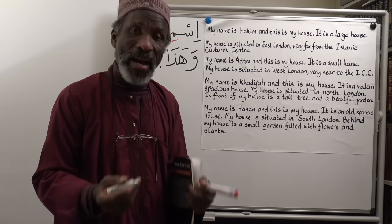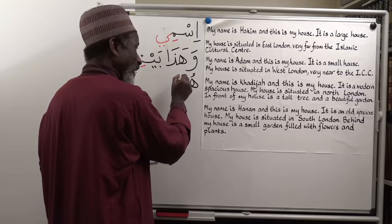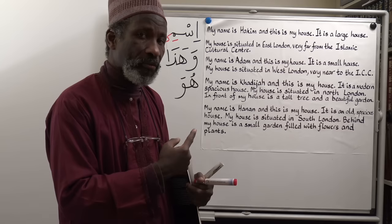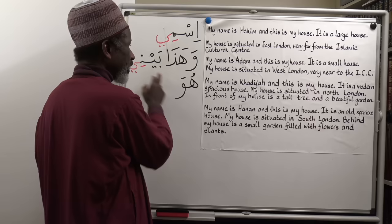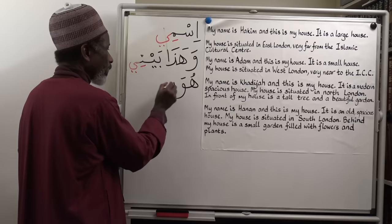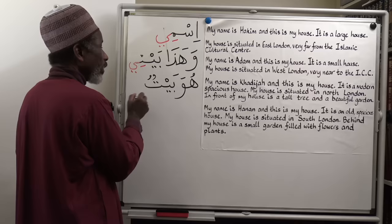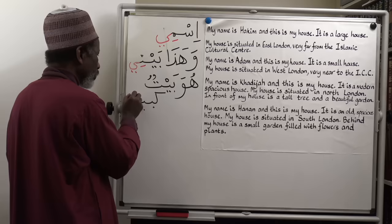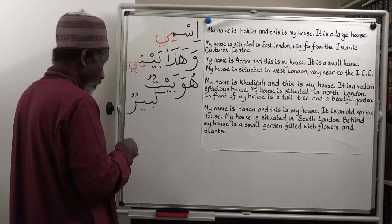It is a large house. We use Huwa here because we are referring to something which is a masculine noun — the house. Huwa means 'it is' and can also be used for 'his.' Huwa baytun kabirun — it is a large house.